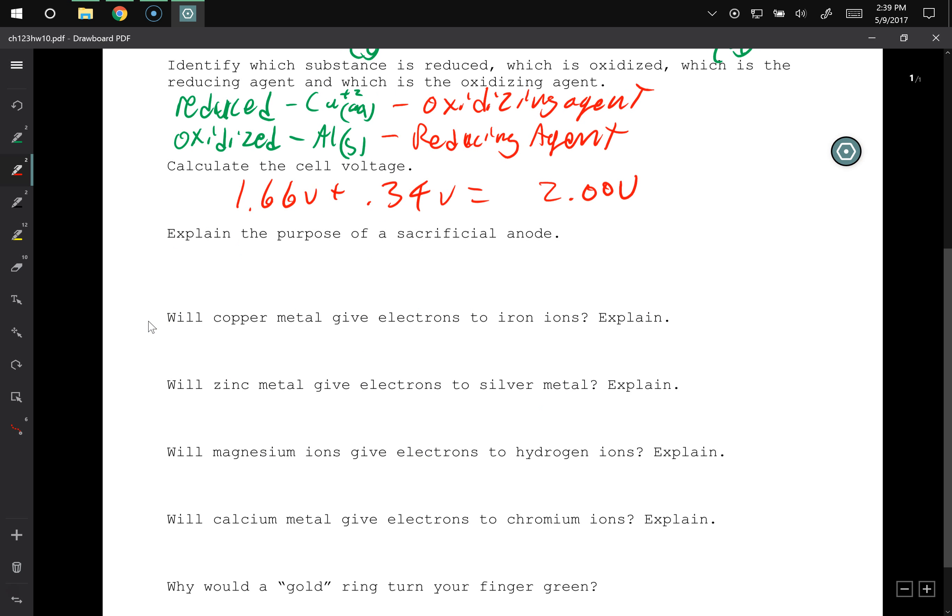Purpose of the sacrificial anode? We go with that. If I can prevent that other thing from rusting by itself allowing itself to rust. And how do you choose your sacrificial anode? So I need to pick something, a higher activity metal.